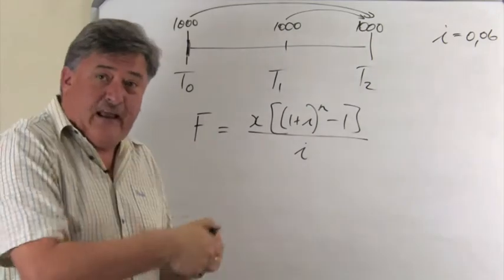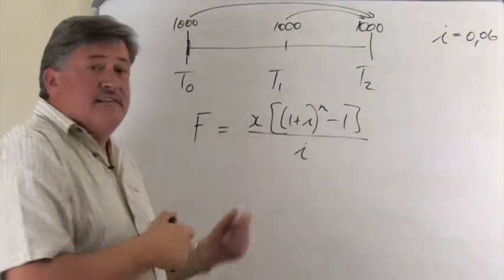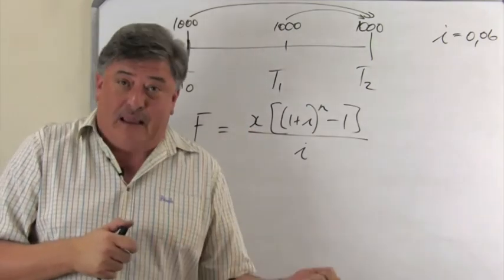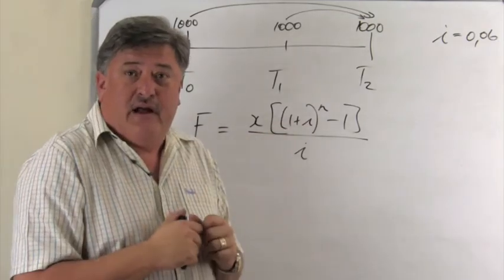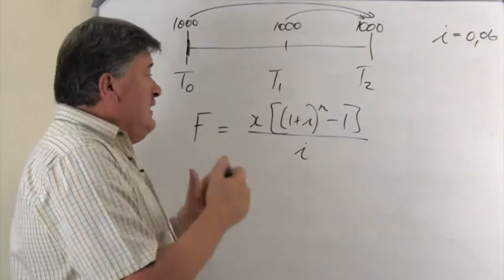Now, F is my future value. X is my monthly payment that I'm going to make. 1 plus I, you know, my interest rate in decimals.